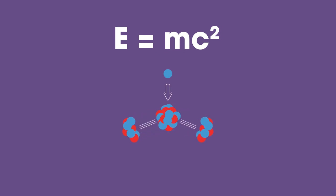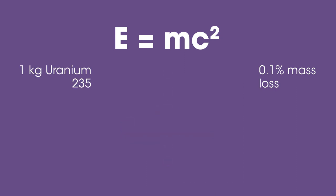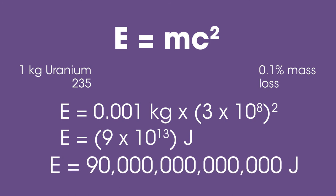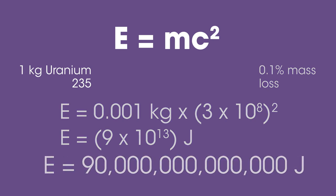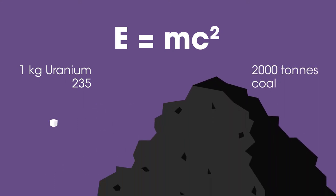On fission about 0.1% mass loss is observed, so if 1 kilogram of uranium-235 underwent fission, the energy transfer would be E equals 0.001 kilograms times 3 times 10 to the power of 8 squared, which equals 9 times 10 to the power of 13 joules. To get this amount of energy from burning coal, you would need to burn 2000 tons. That's a million times the mass of the uranium.